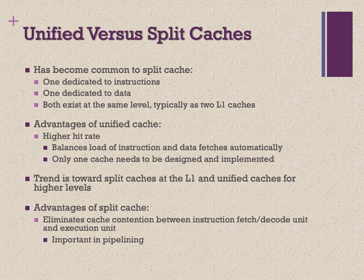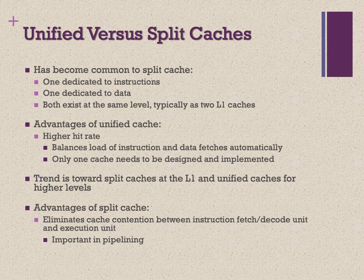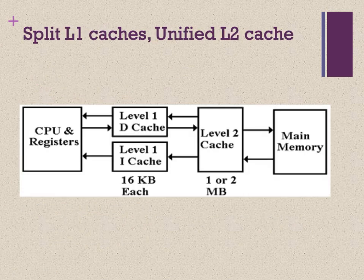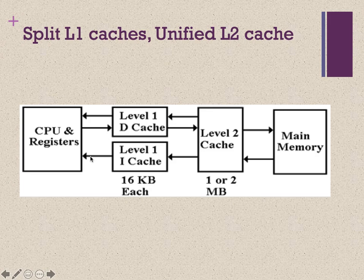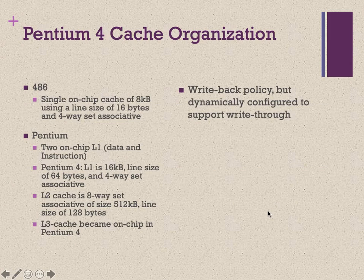L1 caches are normally split into separate instruction cache and data cache, while L2 and L3 caches are unified. The advantage of split cache is eliminating cache contention between the instruction fetch/decode unit and the execution unit. In this example, within the CPU we have an L1 data cache and an L1 instruction cache. For the data cache we perform read and write operations; for the instruction cache only read operations, since the CPU does not write instructions.